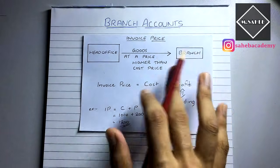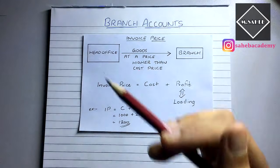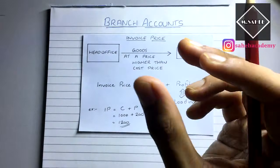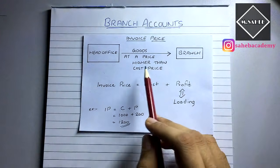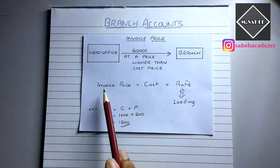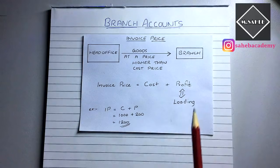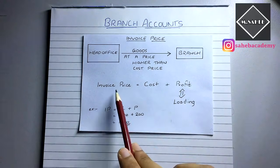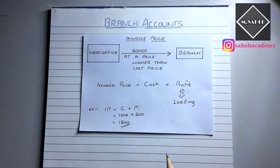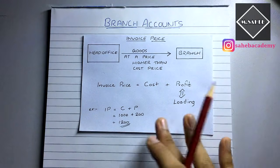When goods are sent from the head office to the branch at a price higher than cost price, it is known as goods sent at an invoice price. The reason it is higher than cost price is because invoice price equals cost plus profit. This profit is also known in technical terms as loading, and that is the word we will use from now onwards.